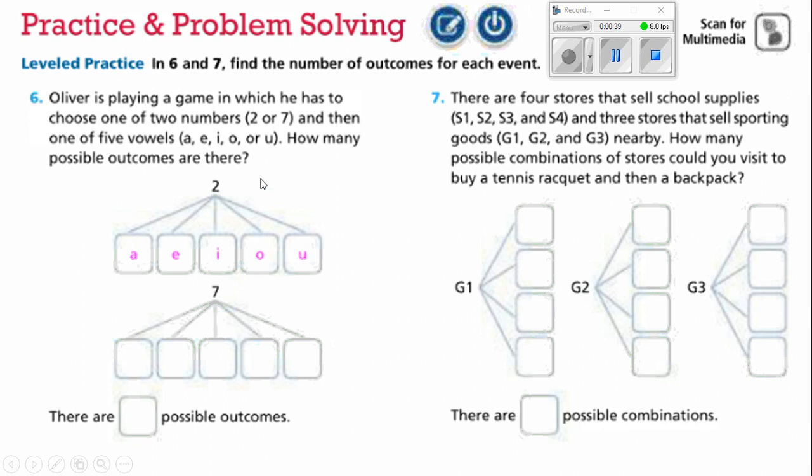How many possible outcomes are there? Well, we know it's either going to be a 2 or a 7 at the beginning, and then the second one has to be A, E, I, O, or U. And if I was to go ahead and choose a 7, same thing. This gives us 10 possible outcomes. We could have found this easily by simply taking the two options that we had and multiplying it to the five options we had afterwards. 2 times 5 equals 10.